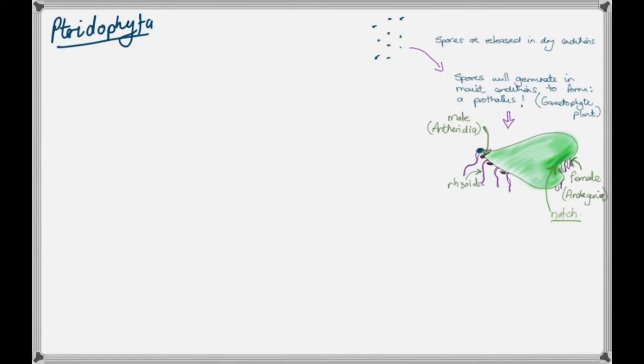The male gamete would need to make its way to the female gamete in order for fertilization to take place. If this spore has germinated in moist conditions to result in this prothalus, those moist conditions are also going to be super important when it comes to fertilization taking place, particularly in a plant like this.